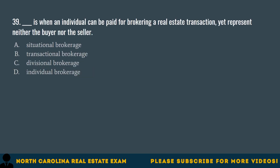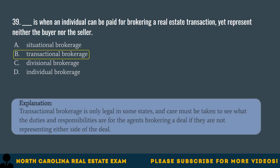Question 39. Blank is when an individual can be paid for brokering a real estate transaction, yet represent neither the buyer nor the seller. A. Situational brokerage. B. Transactional brokerage. C. Divisional brokerage. D. Individual brokerage. The correct answer is B. Transactional brokerage. Transactional brokerage is only legal in some states, and care must be taken to see what the duties and responsibilities are for the agents brokering a deal if they are not representing either side of the deal.